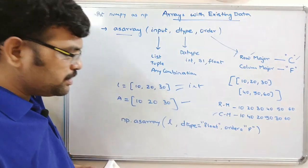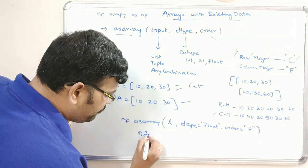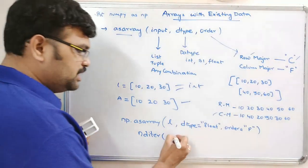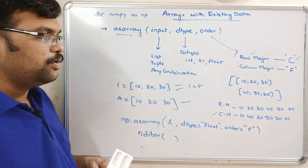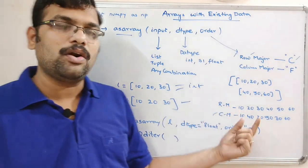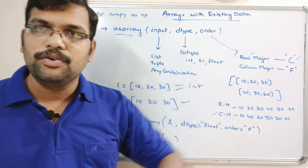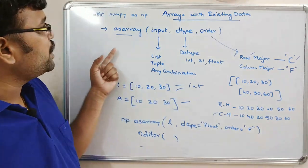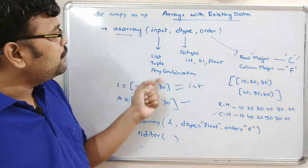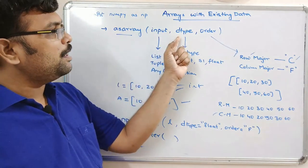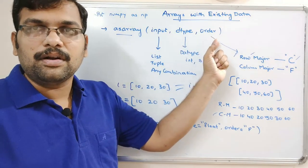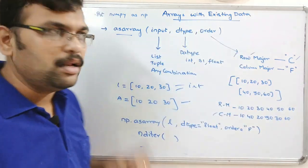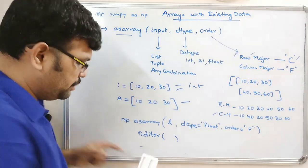There is a function called `nditer` which can be used to print elements in a single dimension so you can observe the difference between column major and row major order. I will show you the execution of these functions in the interpreter as we move on to the next function.